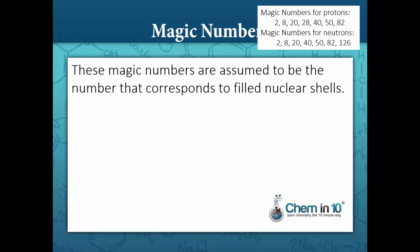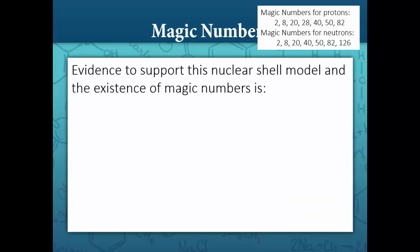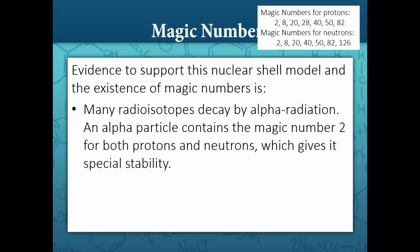These magic numbers are assumed to correspond to filled nuclear shells, similar to — but not necessarily the same as — the number of electrons in filled electron shells that give noble gases special stability. One piece of evidence to support this nuclear shell model is that many radioisotopes decay by alpha radiation, and an alpha particle contains the magic number 2 for both protons and neutrons, which gives it special stability.